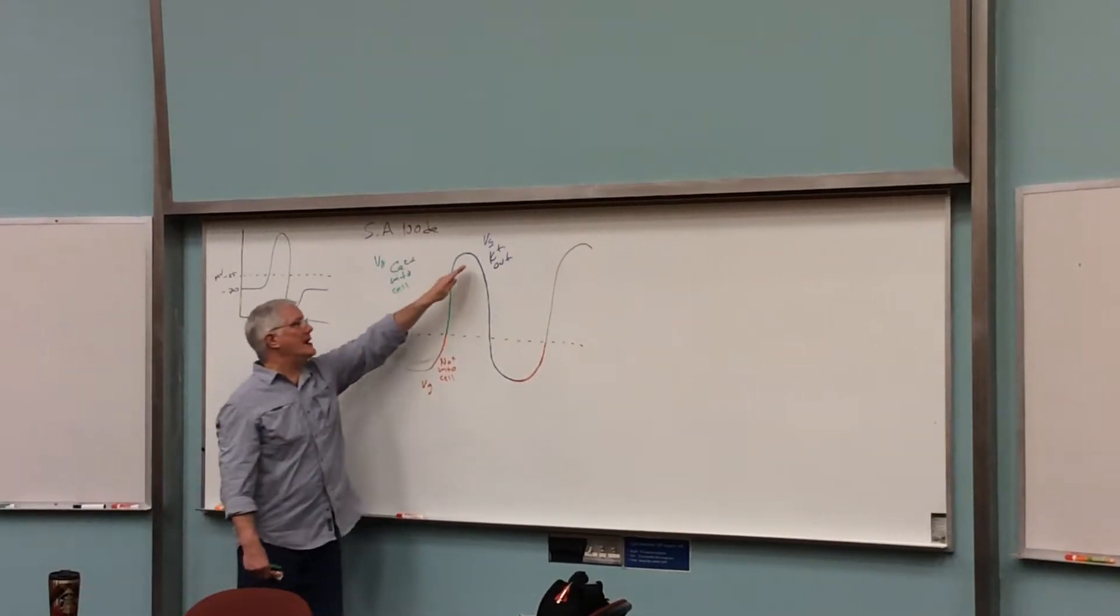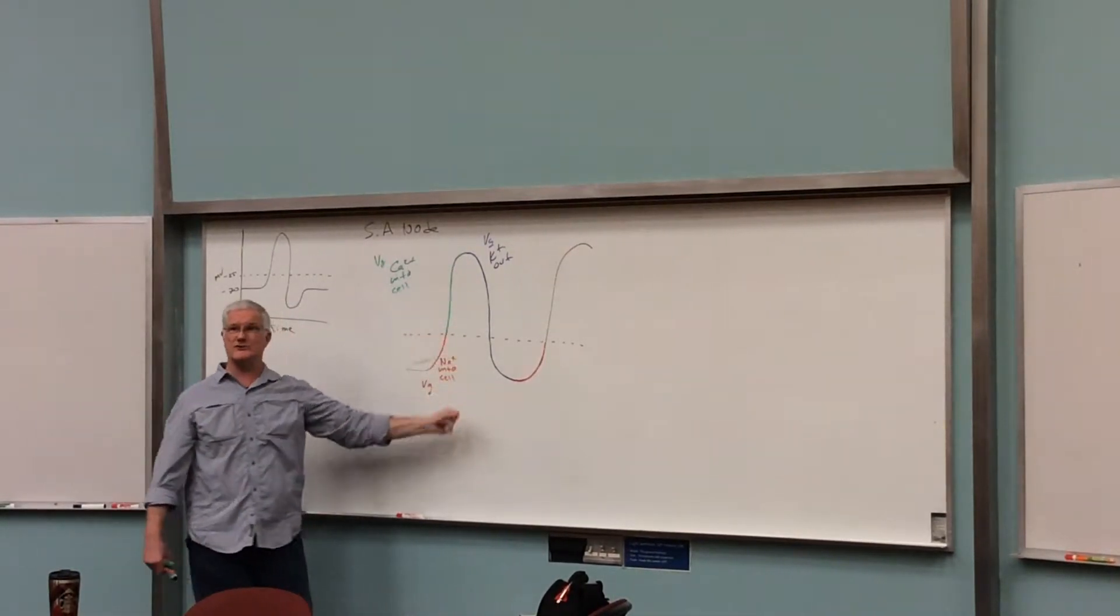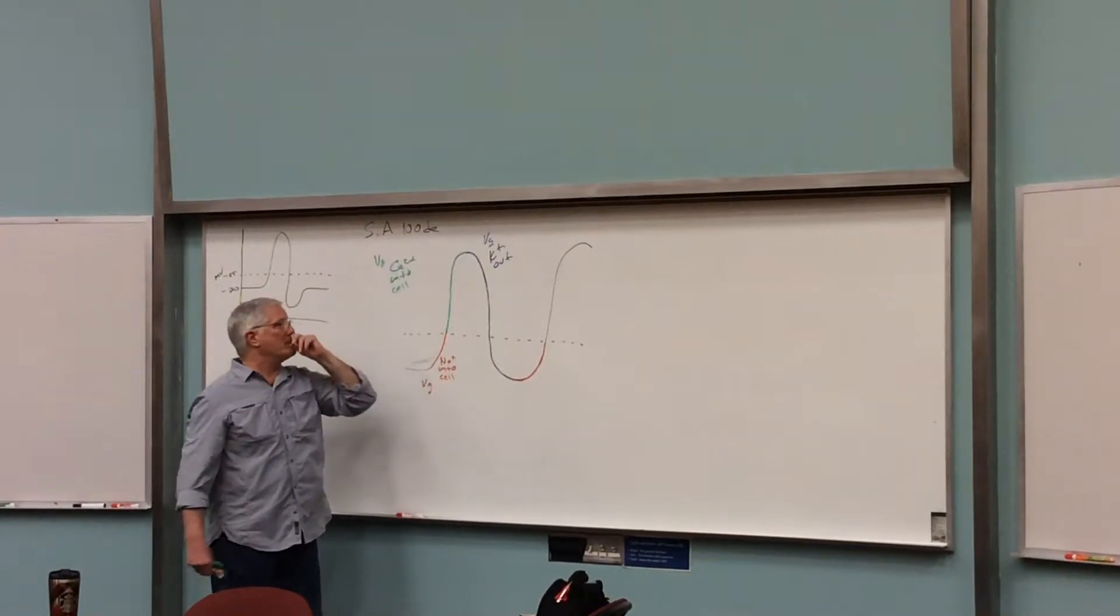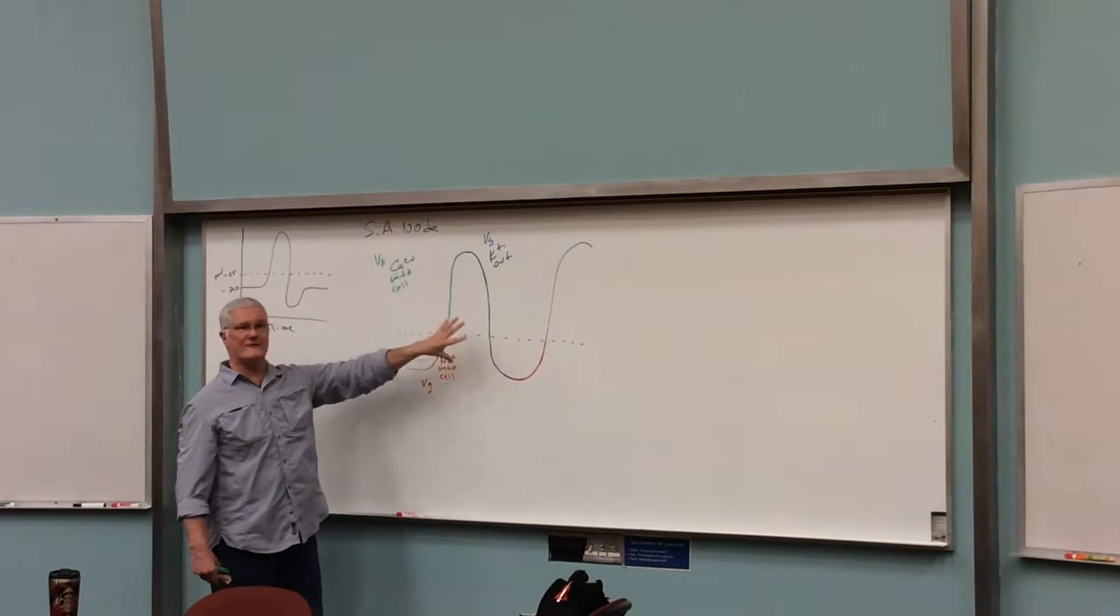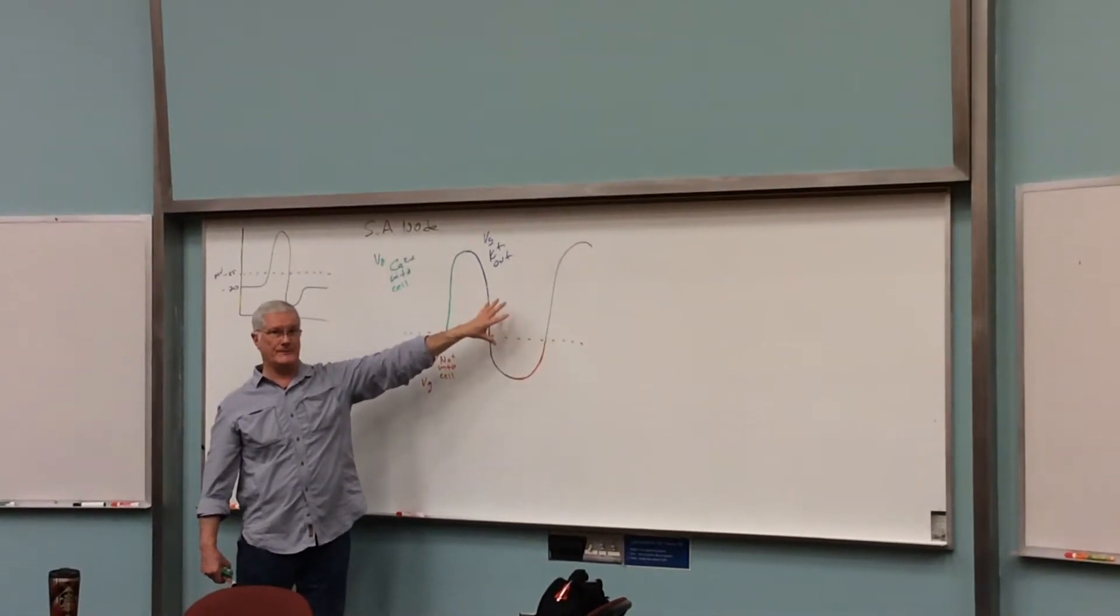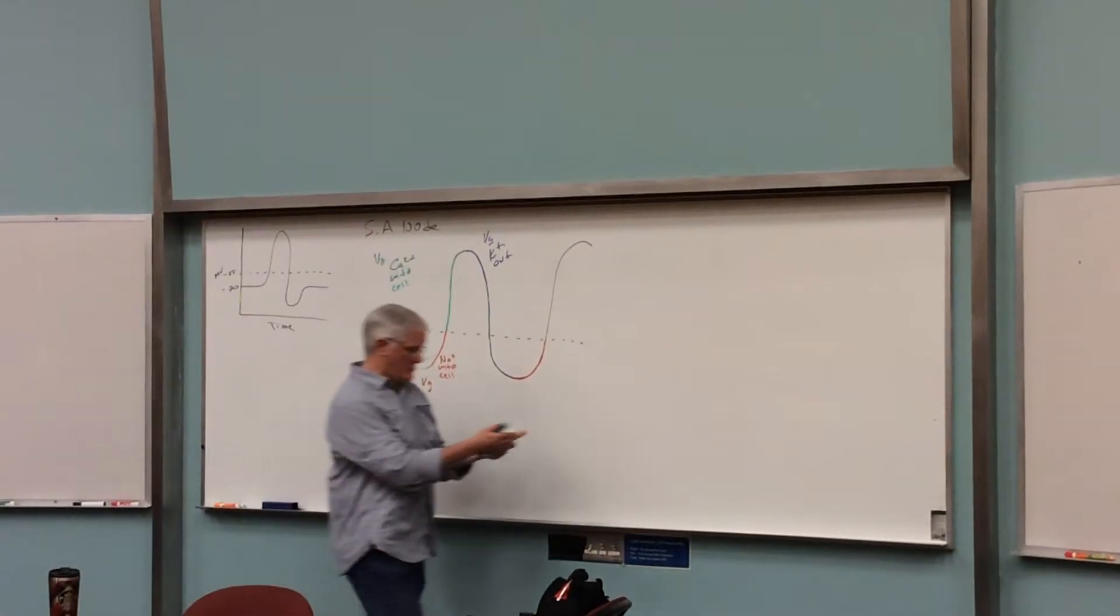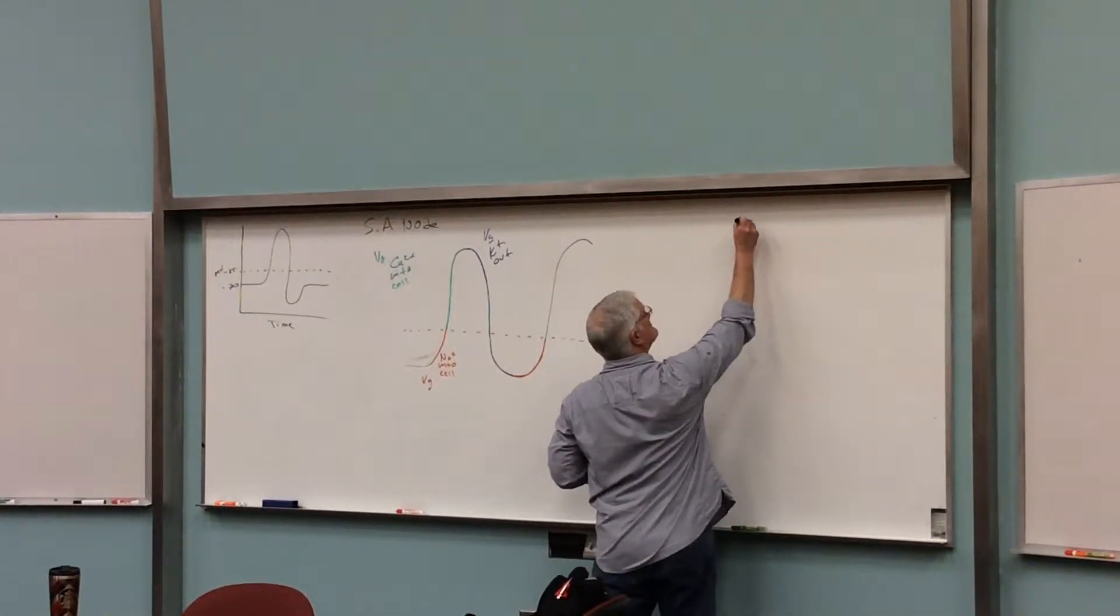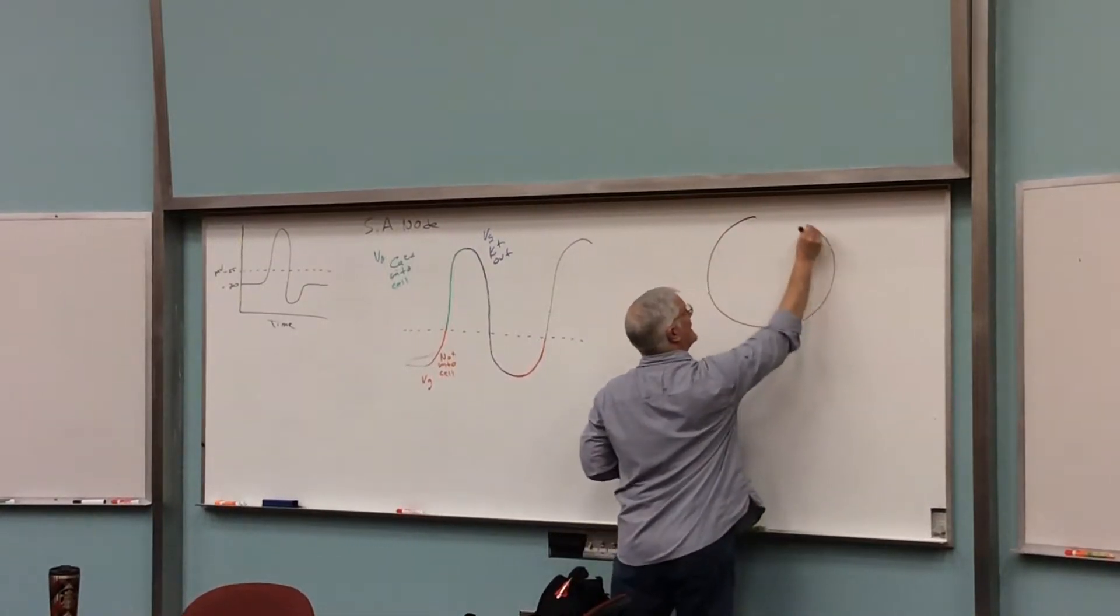In a sense, as the cell becomes more negative, that triggers the next one. Now, what we want to look at is how ions can influence this action potential. We're going to draw a cell big enough for us to look at.